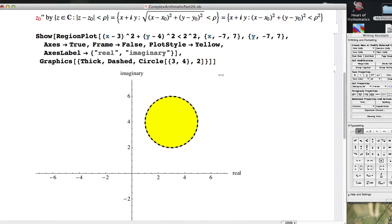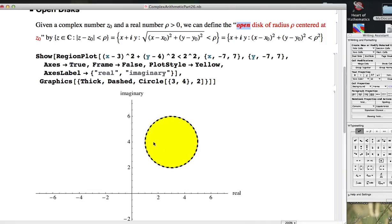The idea of an open disk is that you're not including the boundary points on this disk, all the points inside. The yellow points here are part of the open disk. Because I made this boundary dash, those boundary points on that circle are not part of the open disk. I used region plot to do this.